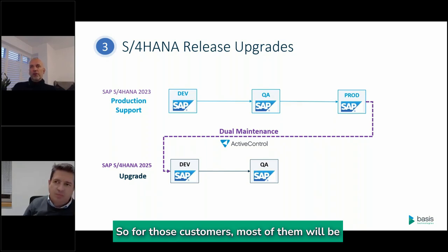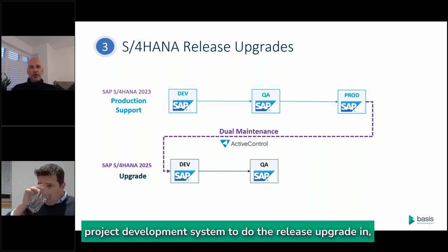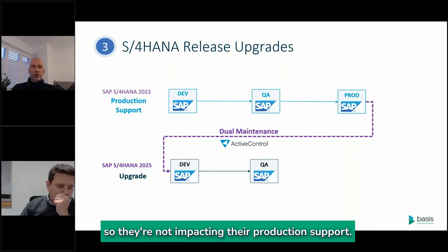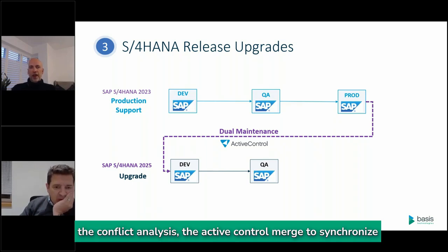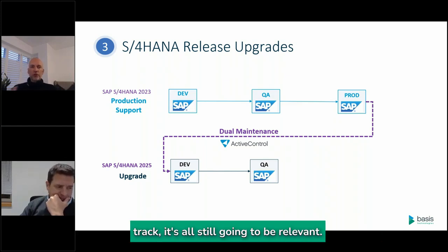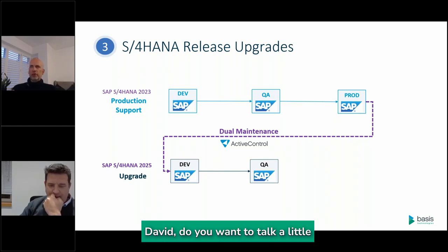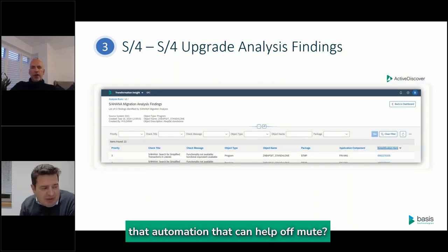For those upgrades, most customers will spin up a project development system to do the release upgrade without impacting their production support track. All the topics discussed earlier — conflict analysis, Active Control merge to synchronize between the production support and upgrade track — are all still going to be relevant. David, do you want to talk about some of the other automation that can help?